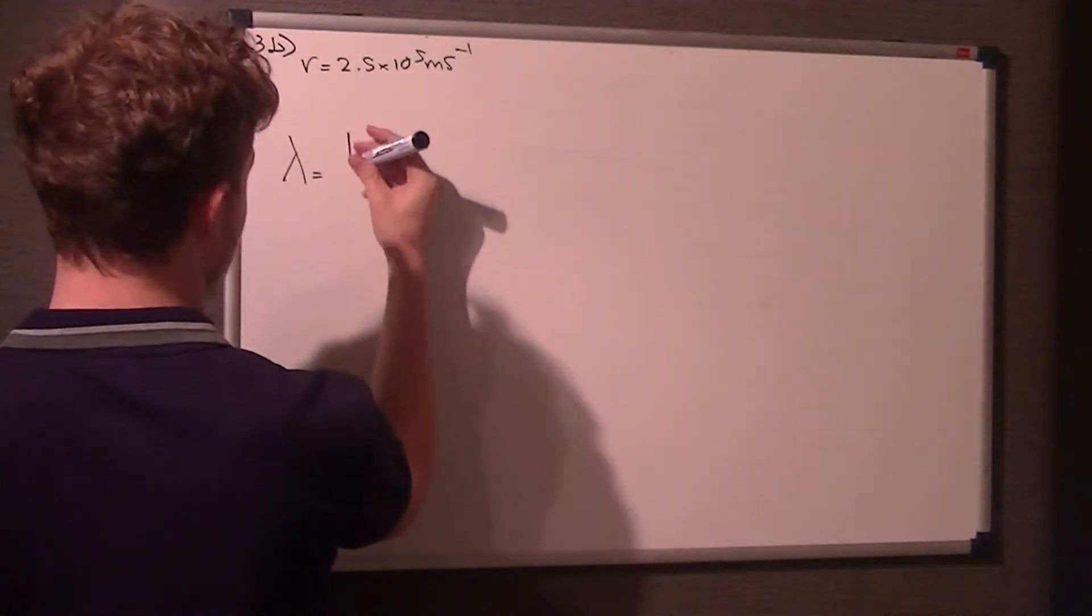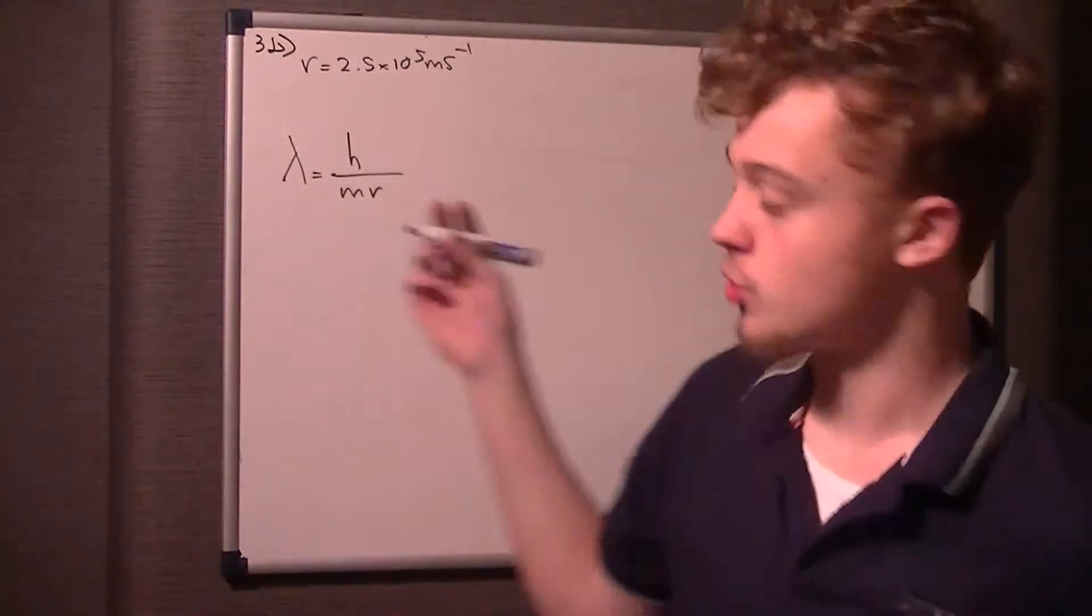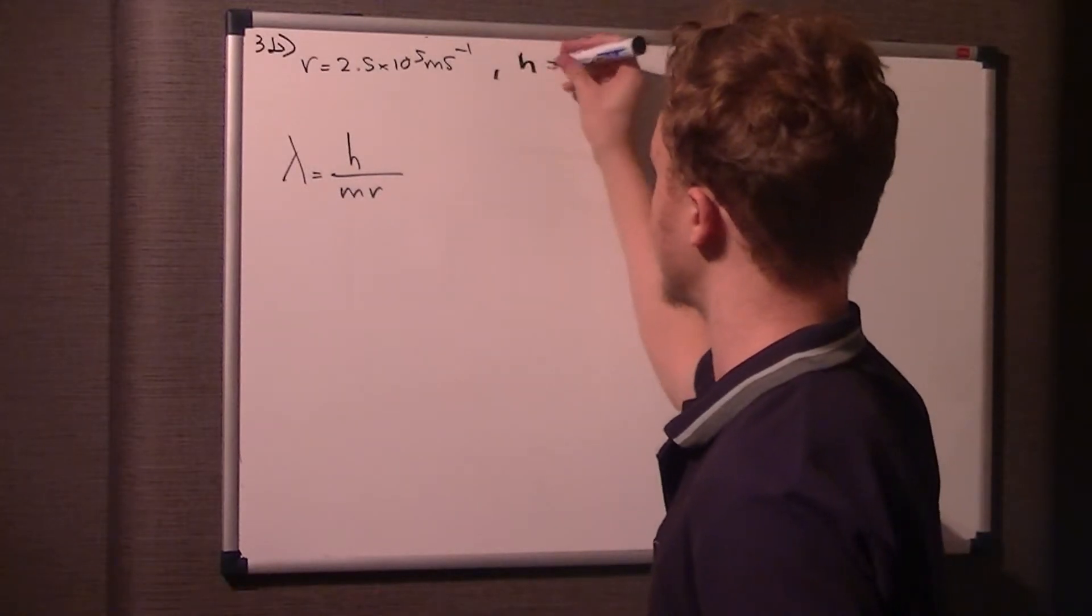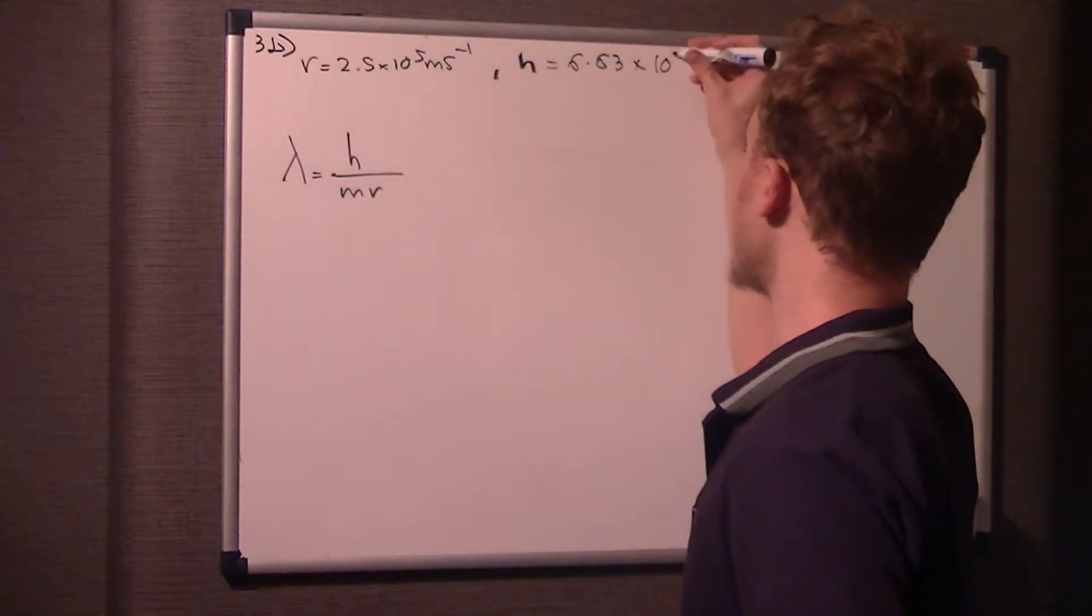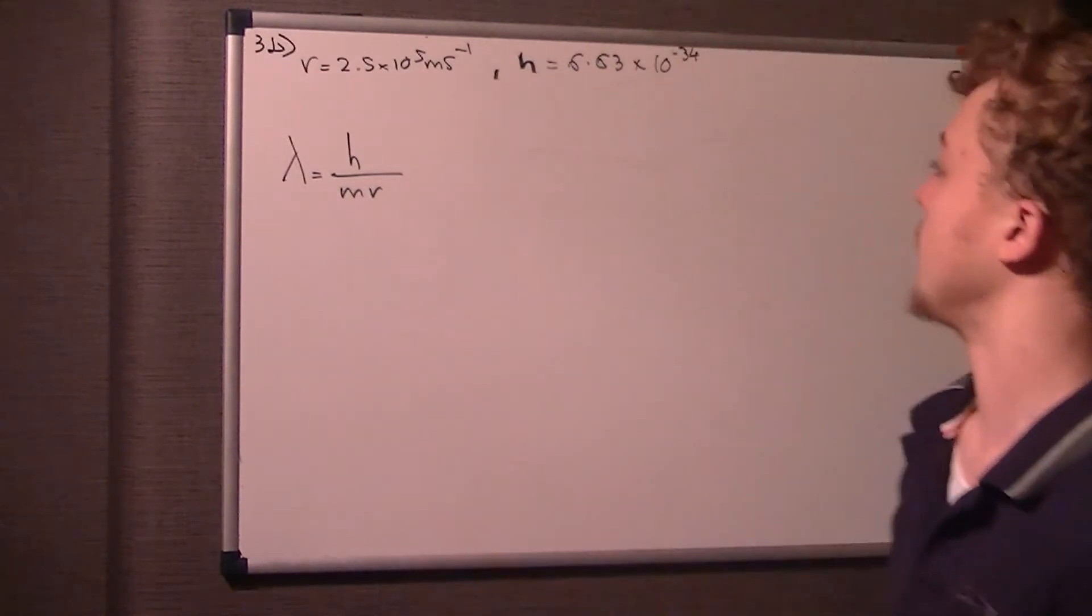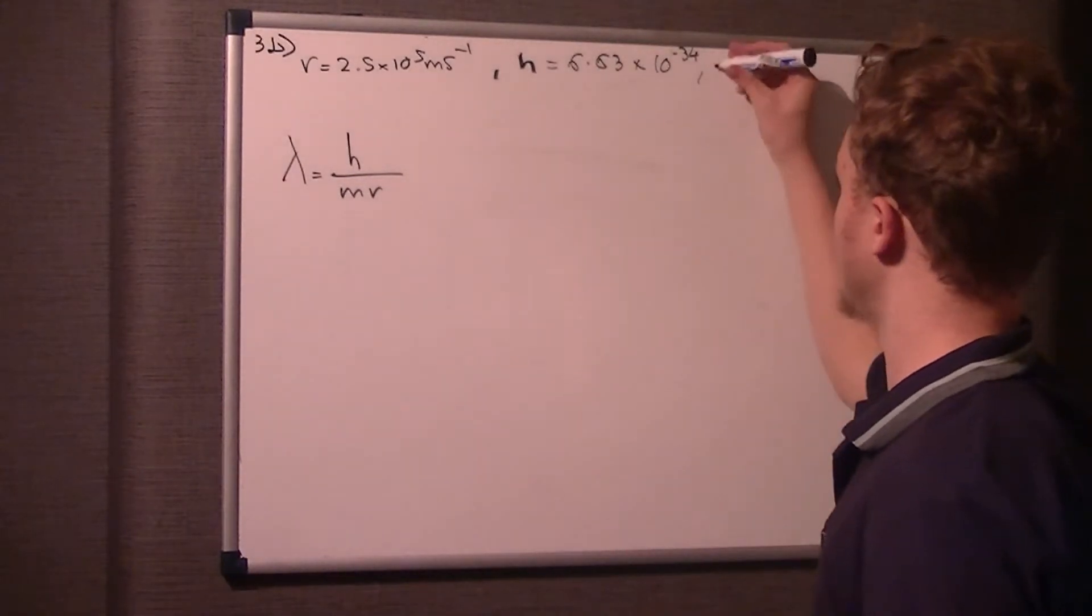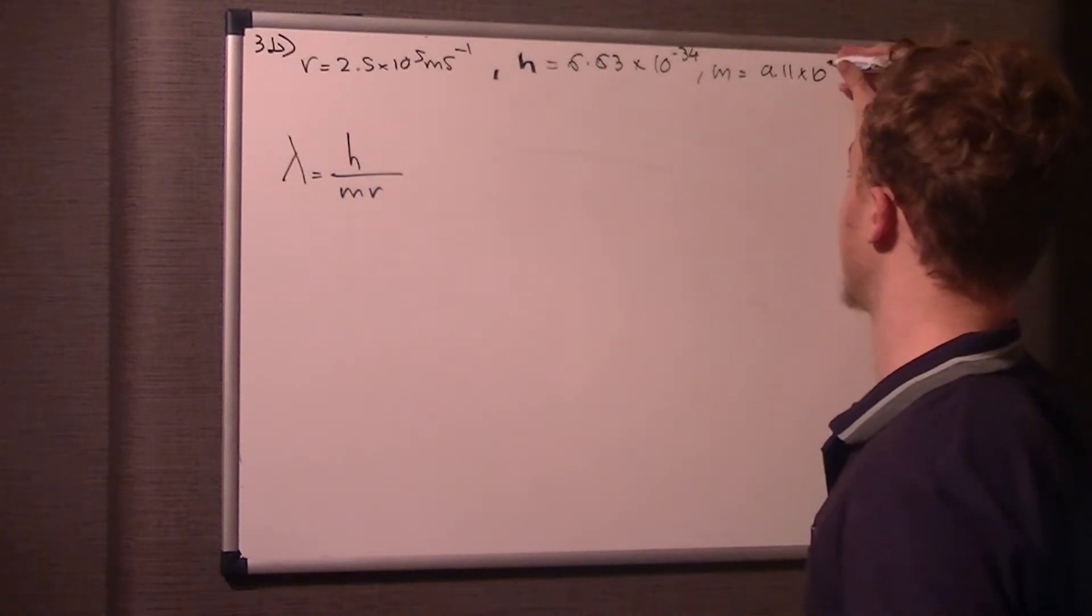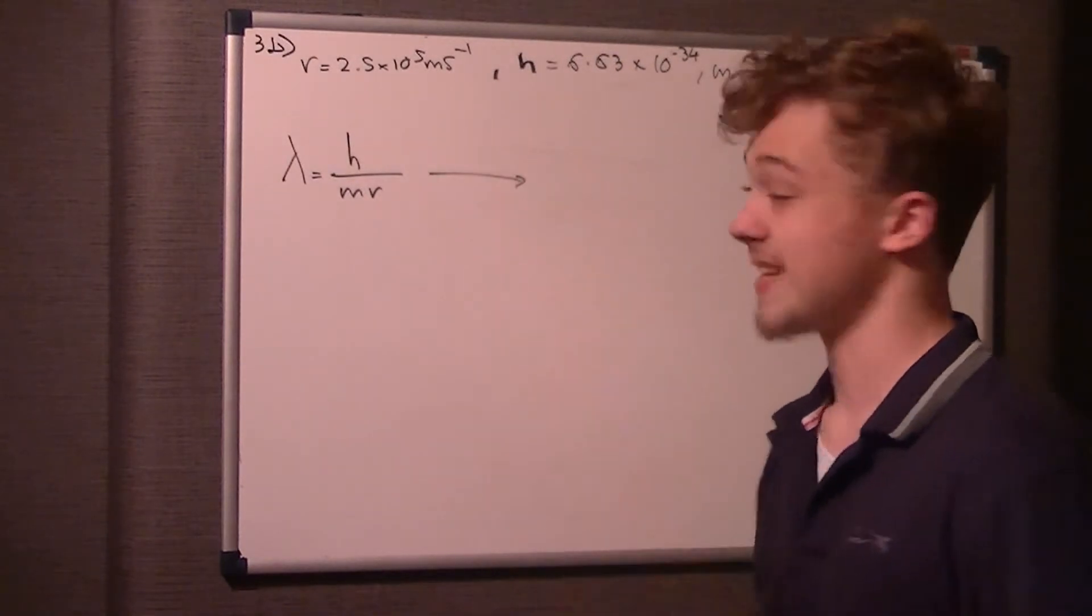We need to find a few things out. h is Planck's constant, which is 6.63 times 10 to the minus 34. The mass of an electron is 9.11 times 10 to the minus 31 kilograms.